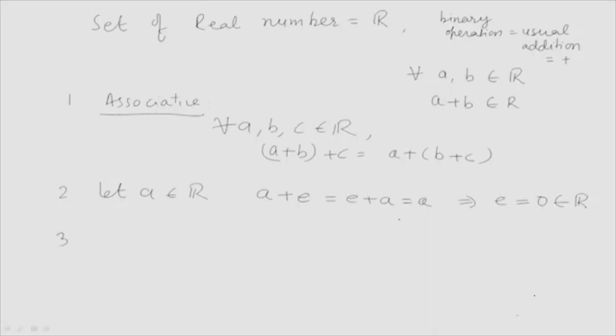Property 3 — inverse: for any A in R, A + B = B + A = E = 0 implies B = -A, which also belongs to R. For example, the inverse of 2 is -2, which is also in R. So all properties are satisfied, meaning R under usual addition forms a group.